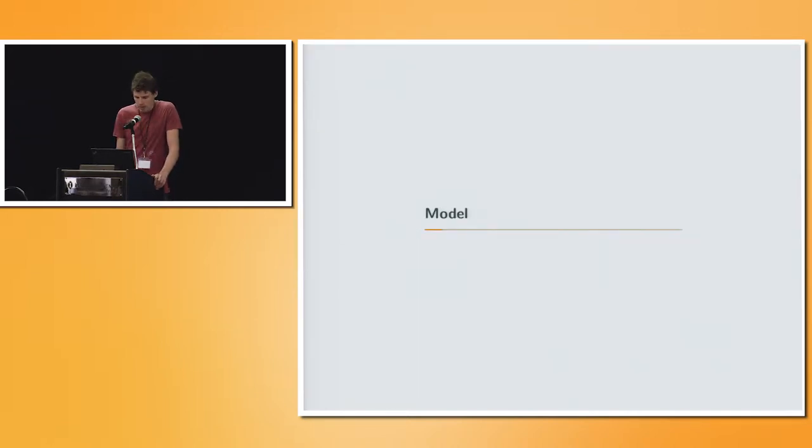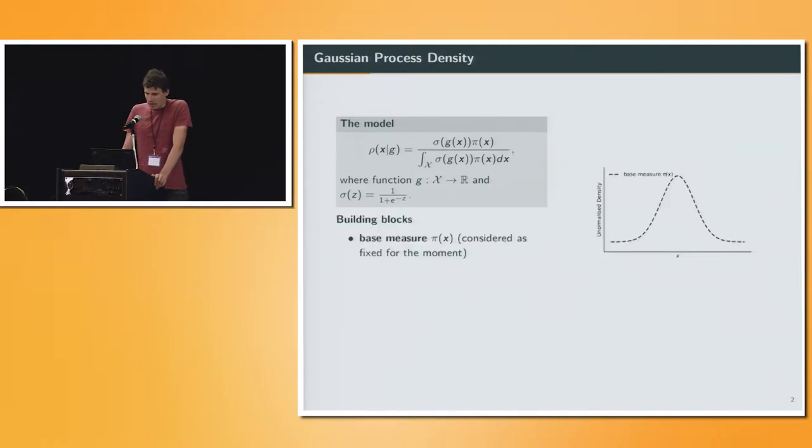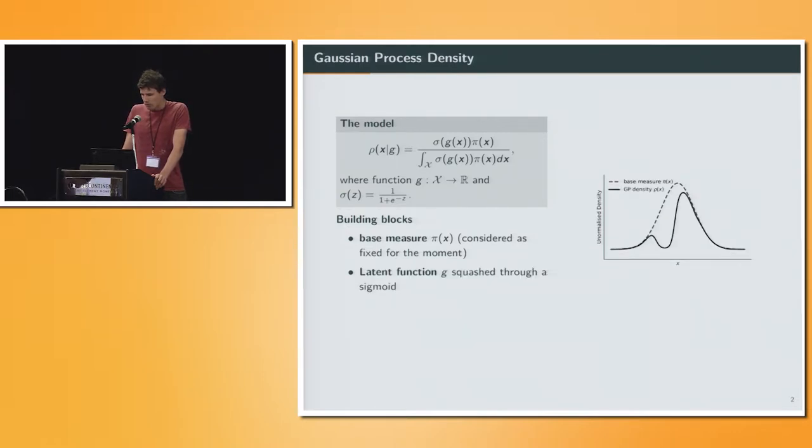The model they propose is the following. We will go through the building blocks step by step. We have a base measure pi, and we assume for the moment it's known. For example, if your space is a line, we assume here it's just a Gaussian over this space. And then we have a latent function g, which is crushed through a sigmoid to make it non-negative, which basically can distort this base measure, which is the reason for the flexibility of this model.